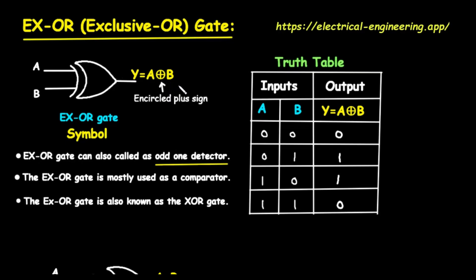Now let's look at some key properties of the EXOR gate. First, the EXOR gate is often called an odd one detector. This is a very important characteristic — it means the output will be high, or a logical one, only when there is an odd number of ones at its inputs.